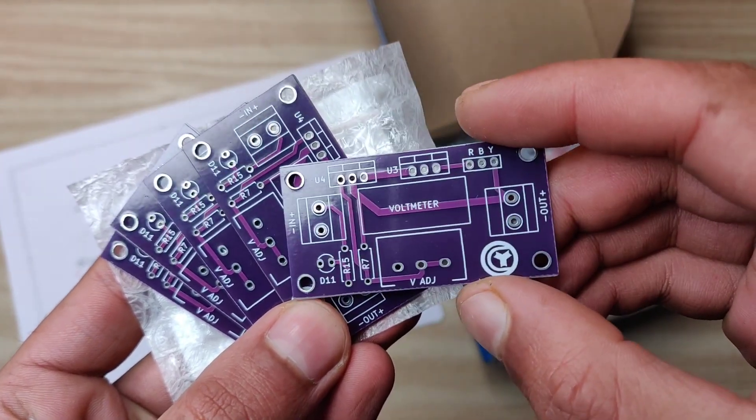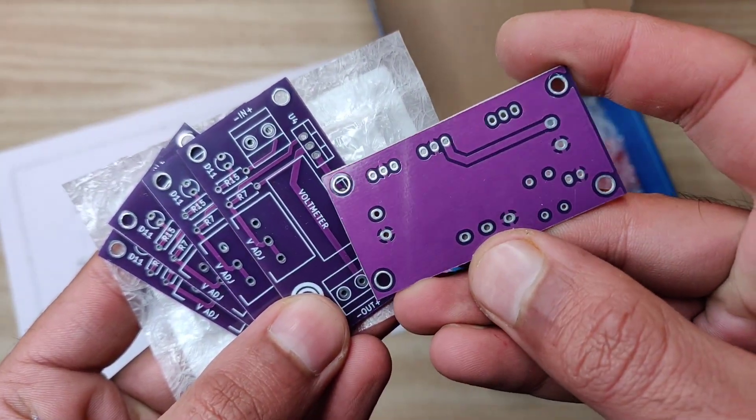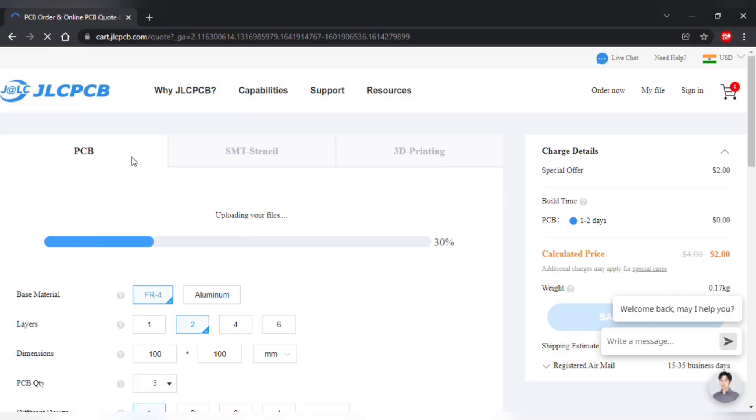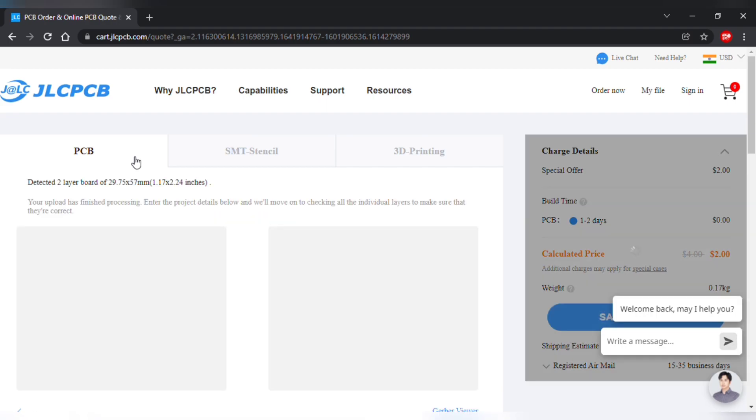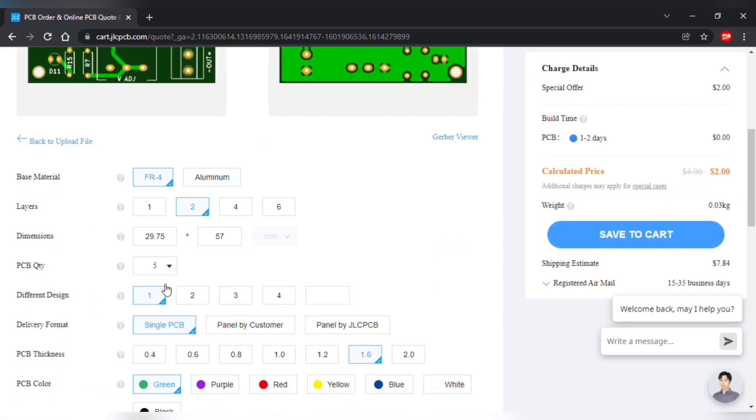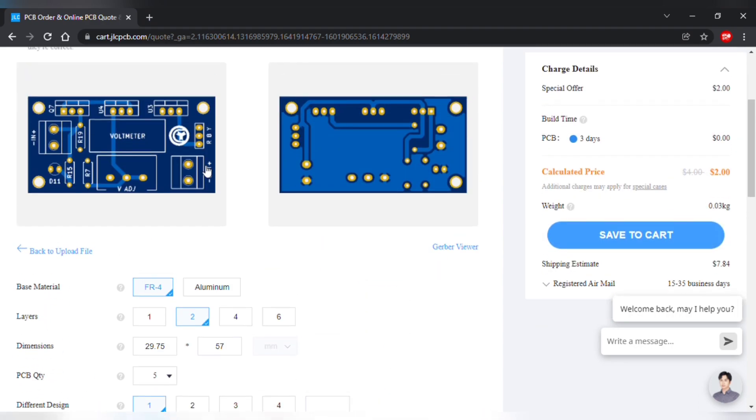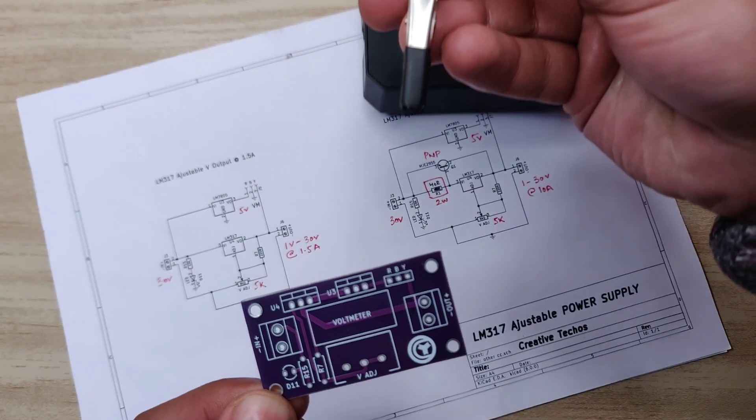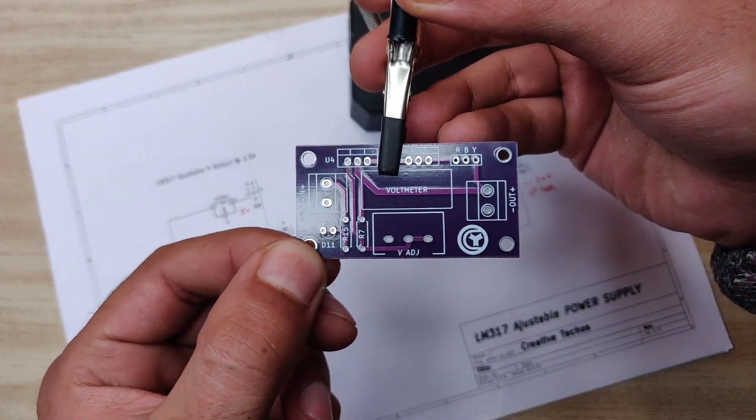As you can see, I got high quality PCBs of five copies for just two dollars from JLCPCB by simply uploading the Gerber files on jlcpcb.com, where you can see preview of PCB and order any color by your choice. Here I have got the purple PCB and now let's place components according to the given diagram.